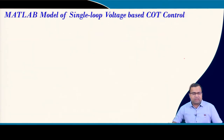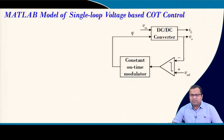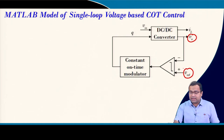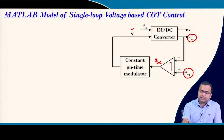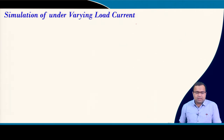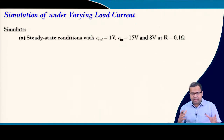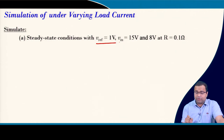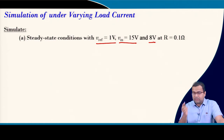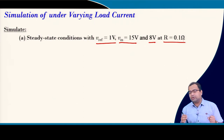We have implemented single loop voltage mode control, where the output voltage is compared with the reference voltage, the comparator output goes to the modulator, and the modulator generates the gate signal to turn on and off the DC-DC converter. Now we want to simulate for different input voltages: reference voltage is 1 volt, input voltage is 15 V and then 8 V, and load resistance is 0.1 ohm — this is for continuous conduction mode.